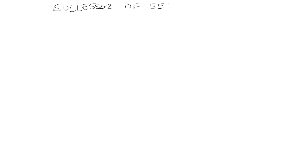The successor of a set — let's say the set A — is A union the set that contains A. So let's look at some examples now. First, let's look at the set {1, 2, 3}.